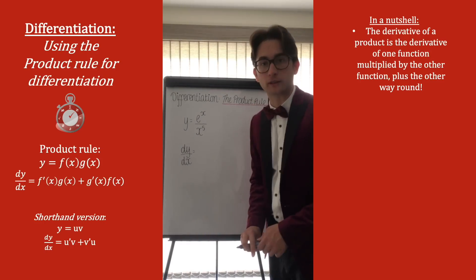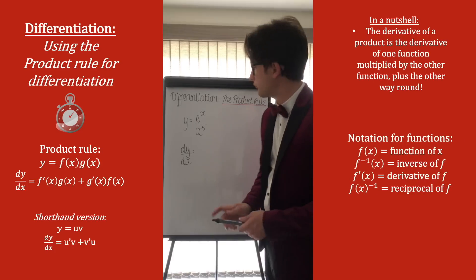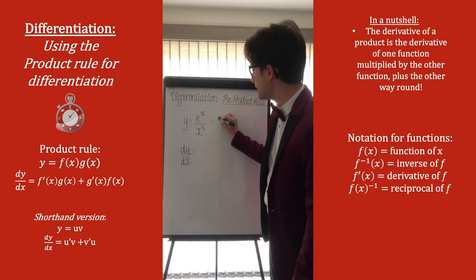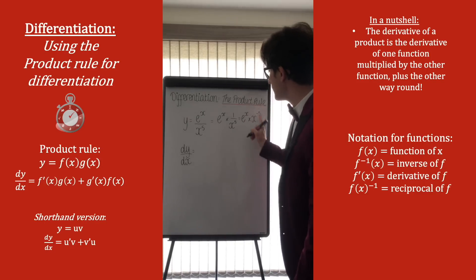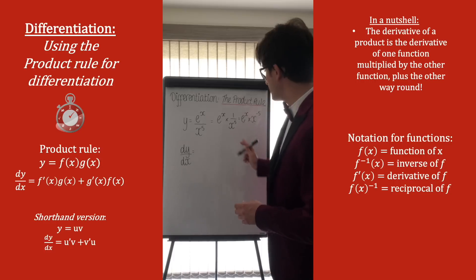OK, so we're going to look at the following example where we have y equals e to the x over x to the power of 5. But remember, we can rewrite this original thing as e to the x times by 1 over x to the 5, which in terms of powers is the same as e to the x times x to the minus 5. And this is now perhaps a clearer product rule. So, let's have a go at doing this.